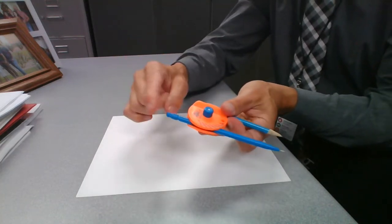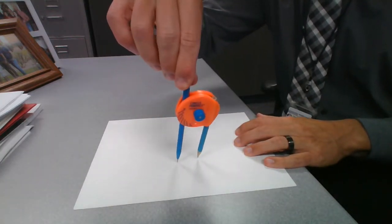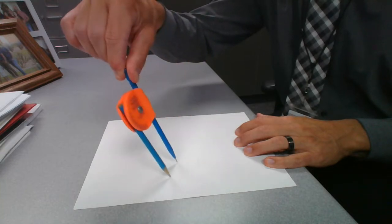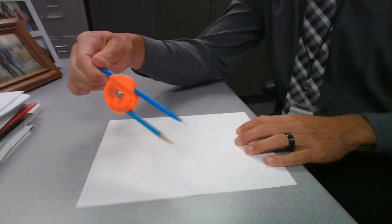What you're going to do is hold it back here. I'm going to hold my paper. You're going to lean it over and you can spin yourself a nice, perfect circle.